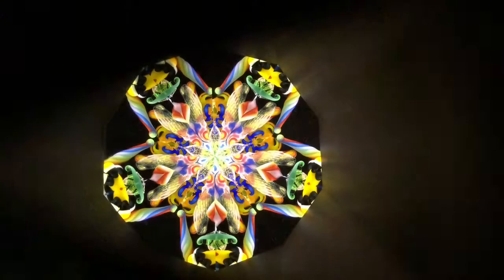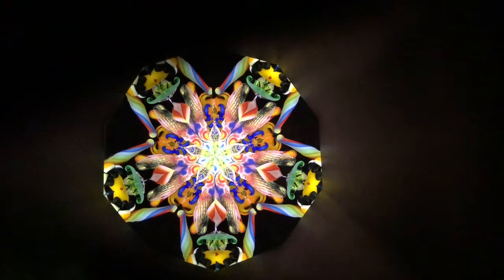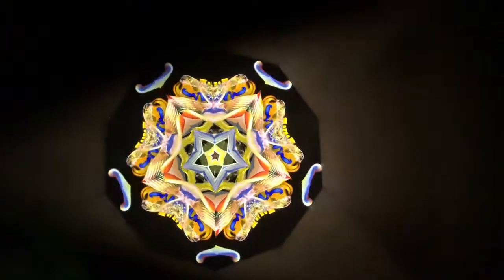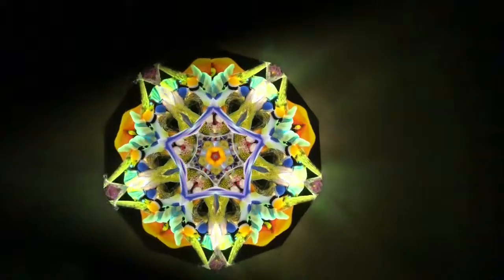This is the interior of the Evolver number 11. It's Oregon bigleaf maple with ebony accents.